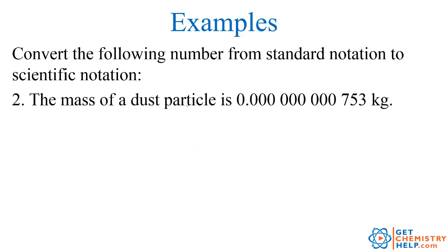How about another one? The mass of a dust particle is 0.0000000000753 kilograms. I think you agree, all these zeros are a bit confusing and a lot more work than trying to write it in scientific notation. So step 1, which of all of these numbers are actually significant?